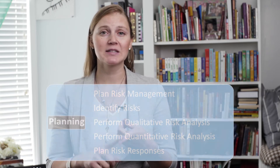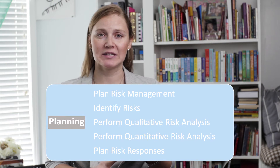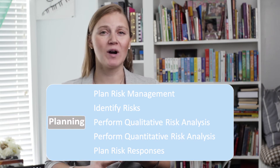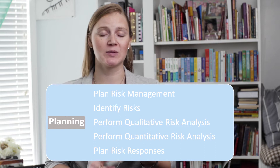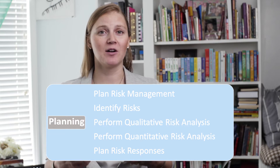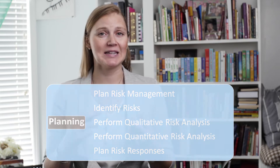The next four processes in planning go hand in hand: identify risks, perform qualitative risk analysis, perform quantitative risk analysis, and plan risk responses. In identify risks, all you're doing is creating a list of risks that could potentially happen on the project. To do so you may want things like a prompt list, because there are so many risks that could happen.